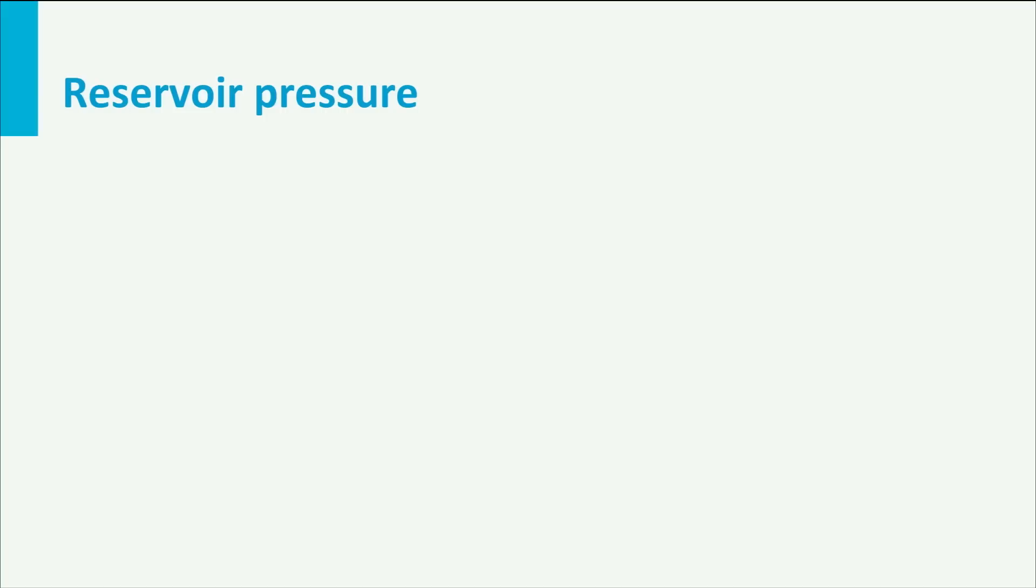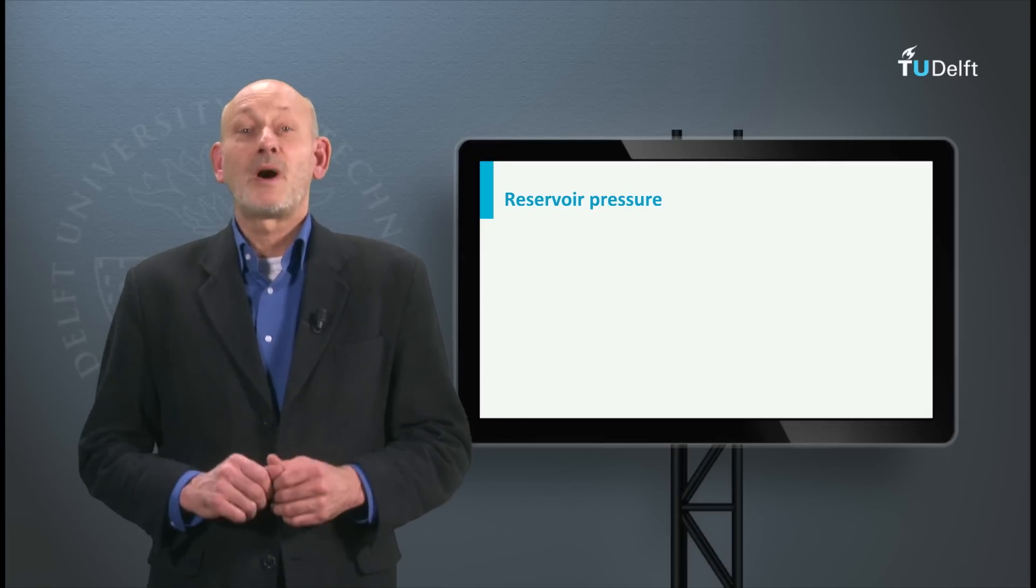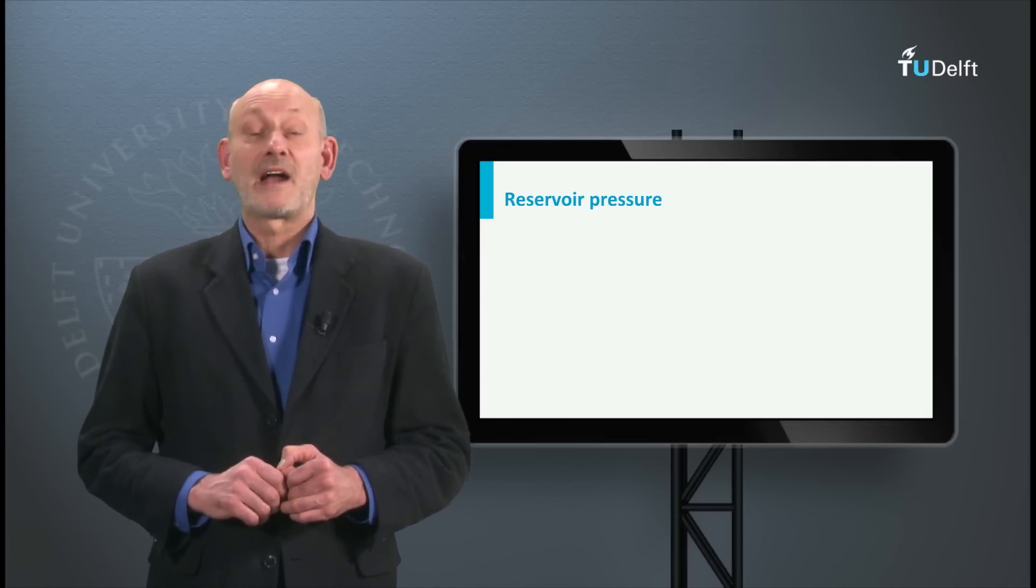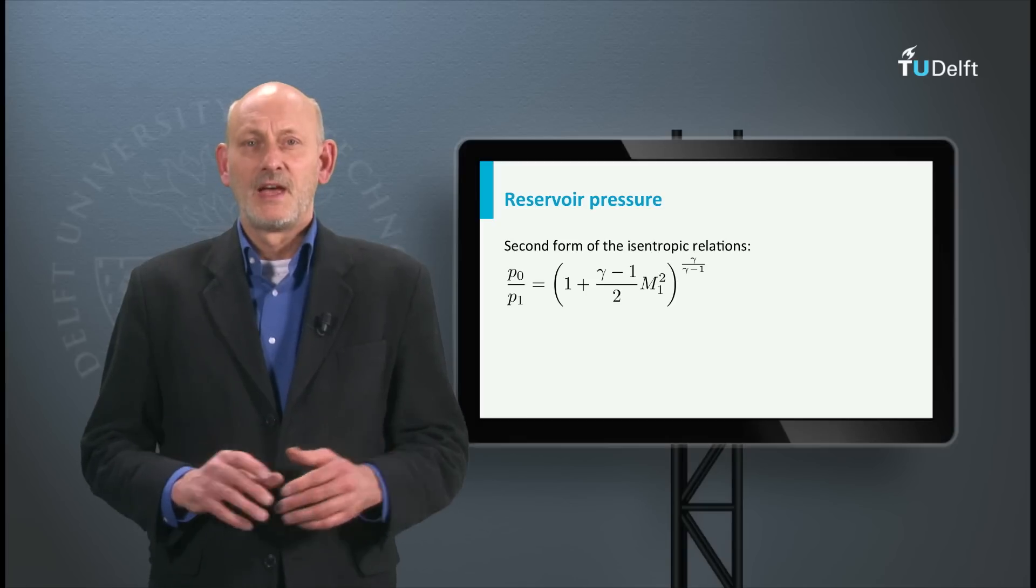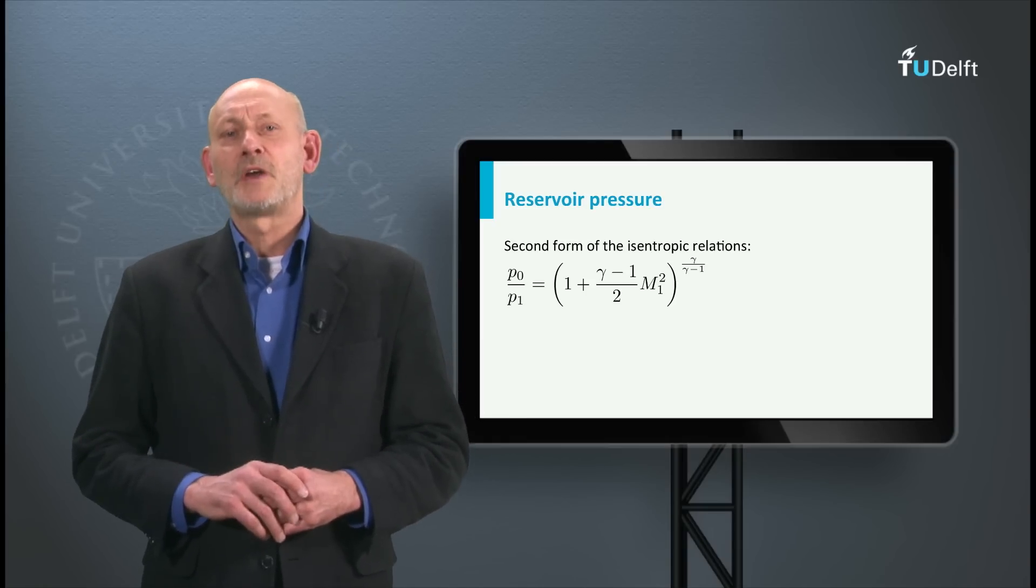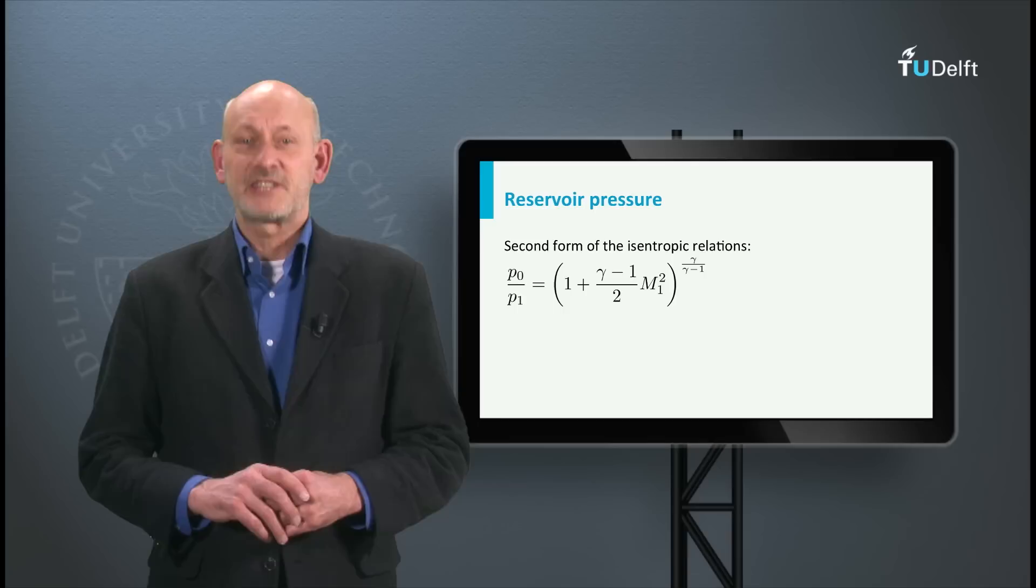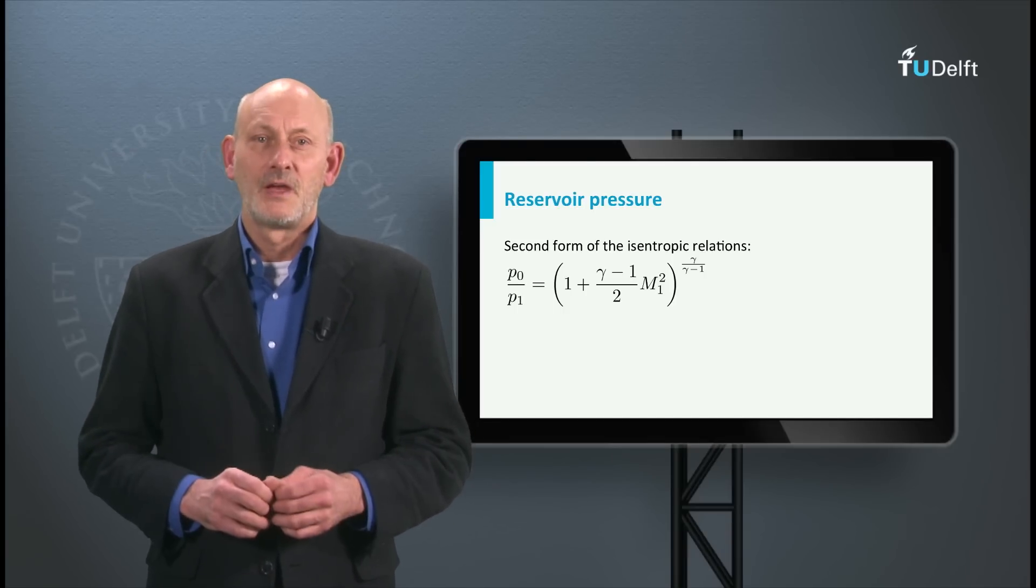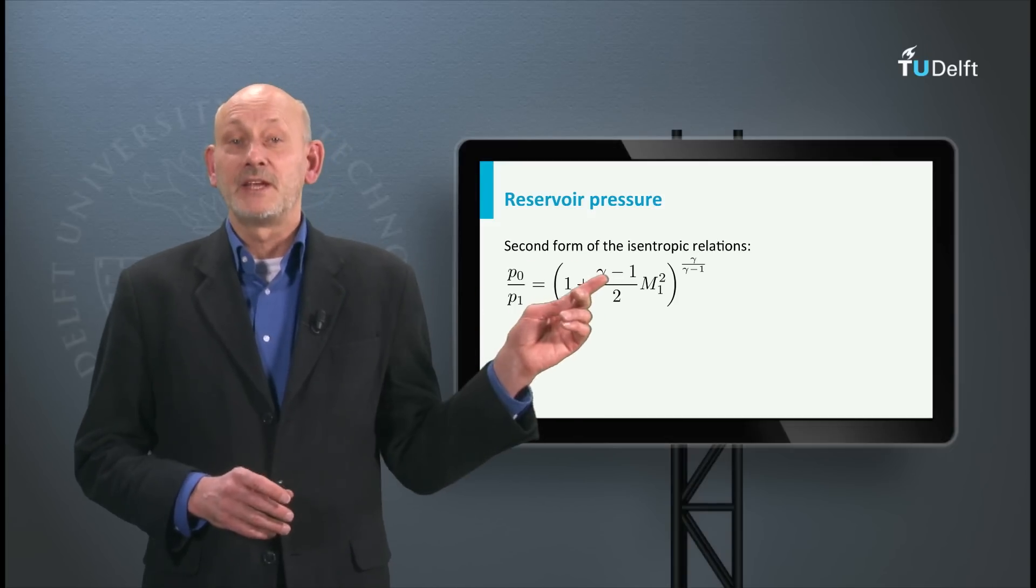Let's concentrate first on A: what reservoir pressure is required? Since the reservoir is a storage for compressed air, the velocity in the reservoir V0 is zero. This makes it possible to use one of the isentropic relations in the second form, which were derived with the energy equation using the fact that V0 is zero. The most suited one is displayed on the screen.